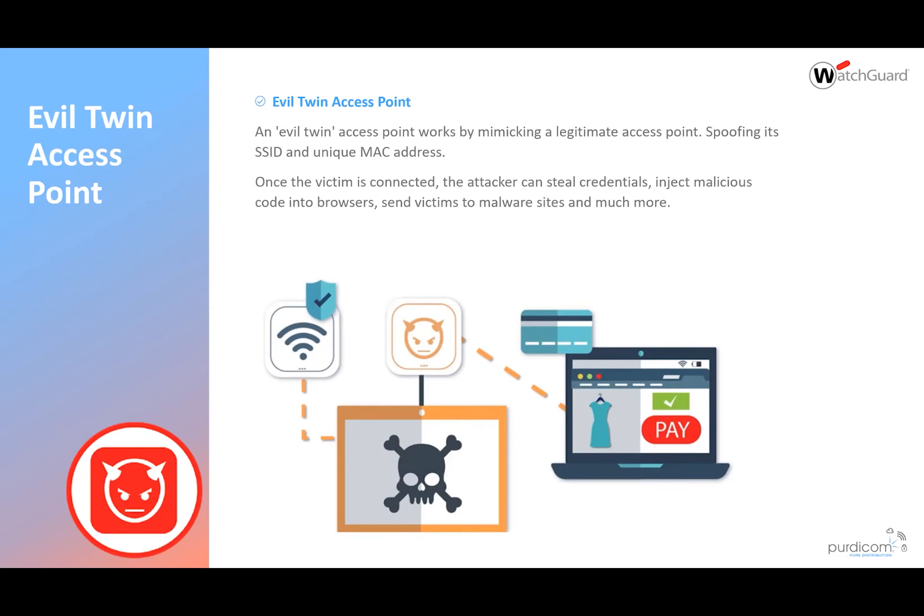Once they've jumped onto that, the attacker is now the man in the middle. They are able to intercept all the credentials they need while backhauling victims through a 4G connection or back onto the local network, so the user is none the wiser that they've been compromised. With that, they can inject things like JavaScript and malware into the user's payload onto their browser.